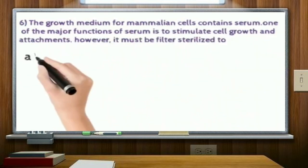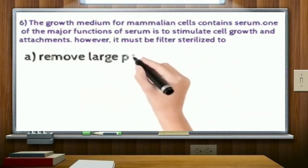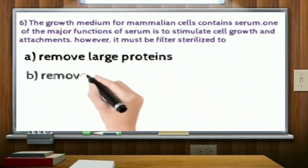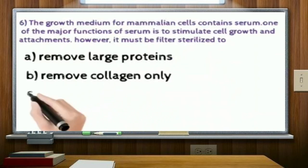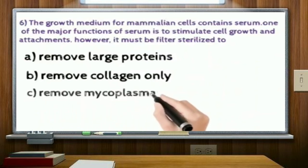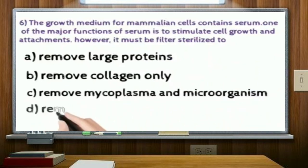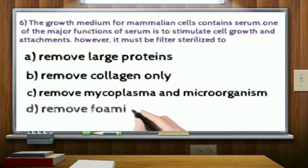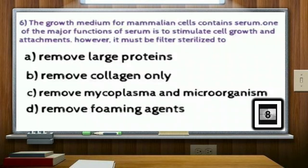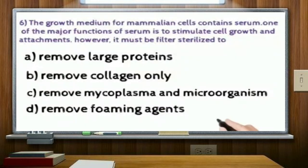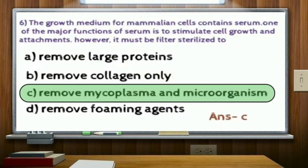The growth medium for mammalian cells contains serum. One of the major functions of the serum is to stimulate cell growth and attachment. However, it must be filter sterilized to: option A, remove large proteins; option B, remove collagen only; option C, remove mycoplasma and microorganisms; option D, remove foaming agents. Correct answer: option C.